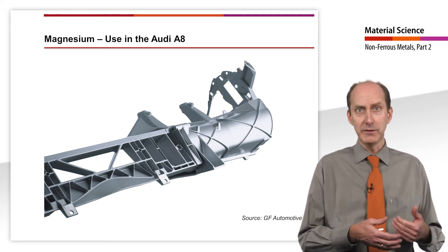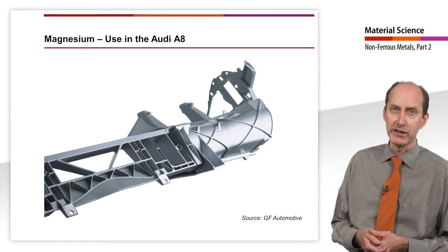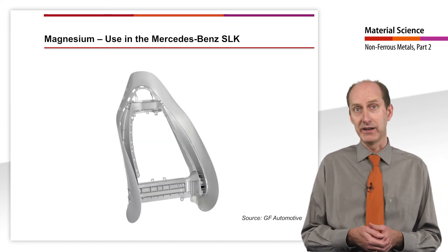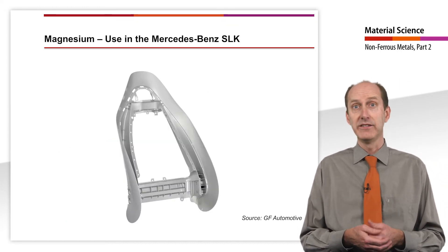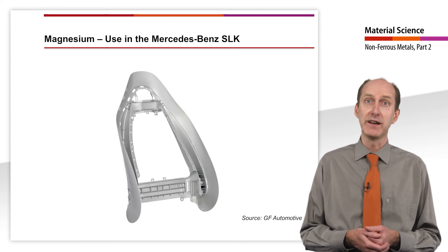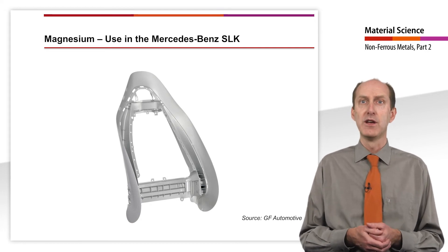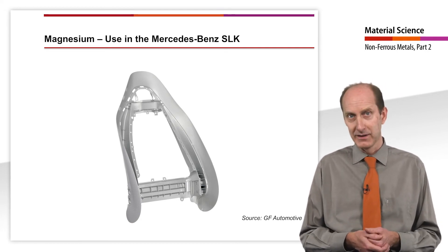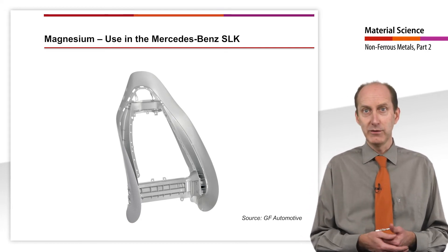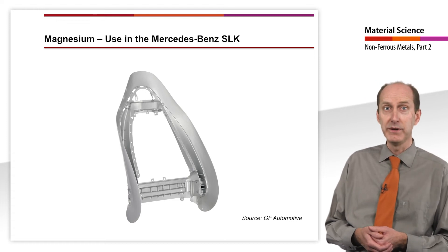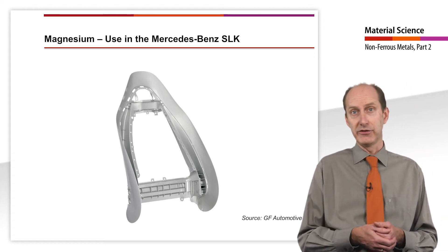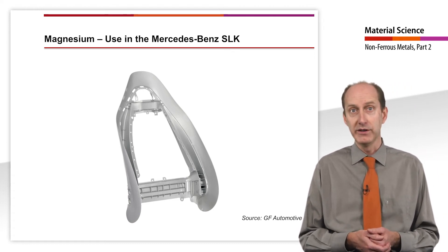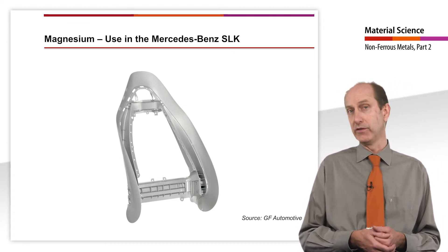The seat backrest structure of the Mercedes-Benz SLK is a lightweight construction made exclusively of die cast magnesium. In the seat, which will later be covered with leather, part of the components even remain visible.